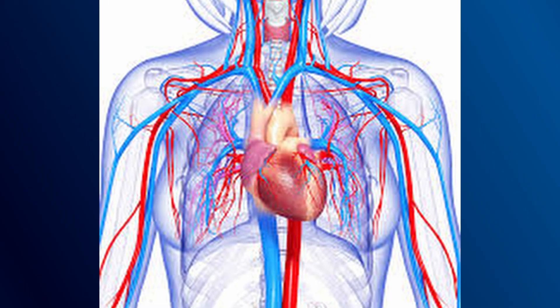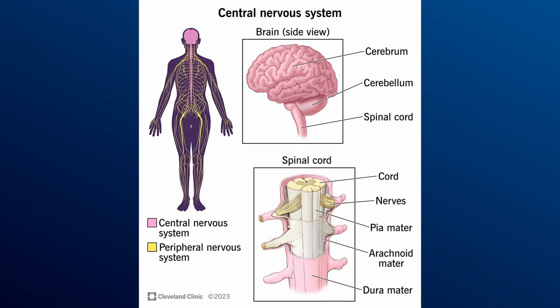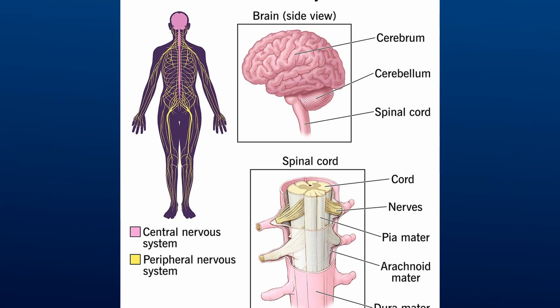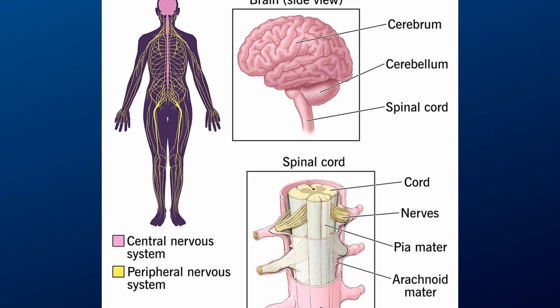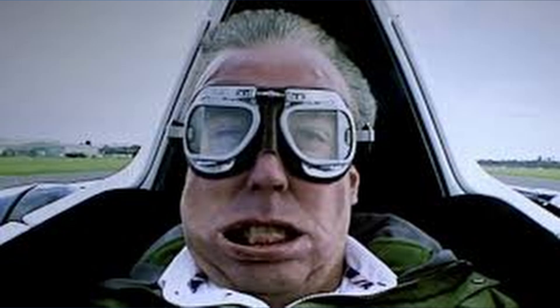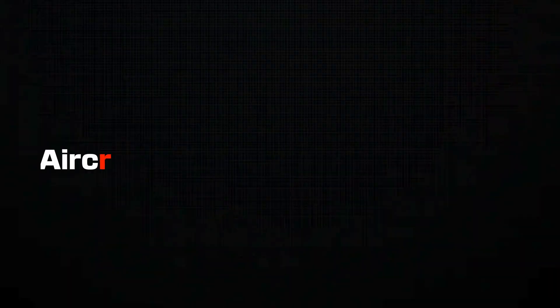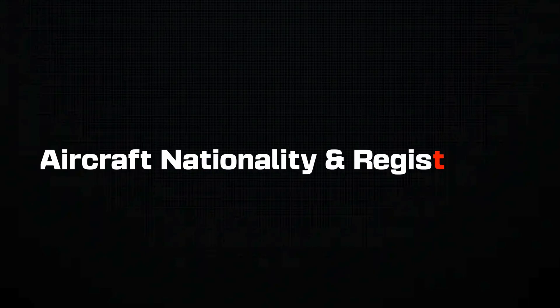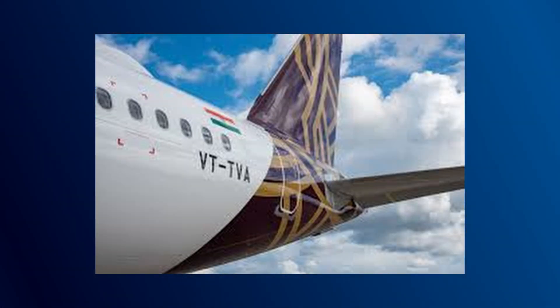Human Performance is one of the most important topics in air regulations. This module covers the circulatory and respiratory systems, hypoxia, hyperventilation, and time of useful consciousness. It also includes the nervous system, sensory illusions, vision and hearing issues, G-forces, and how human factors contribute to day-to-day flying and its limitations. Expect physiology-based MCQs with a focus on aviation relevance.